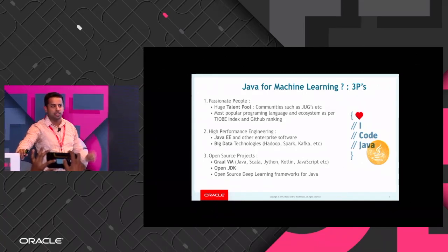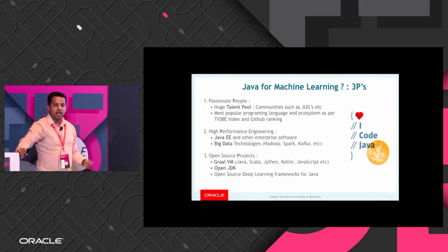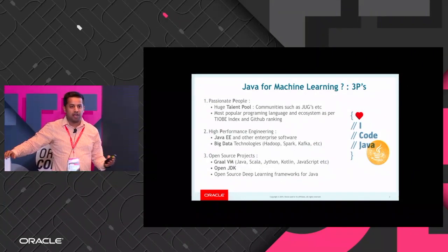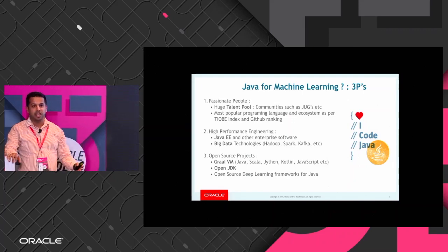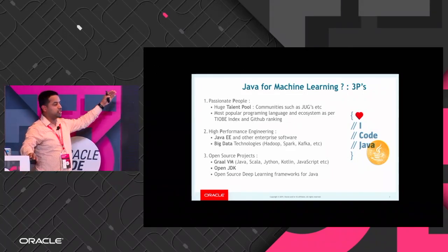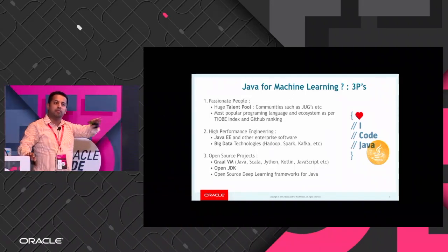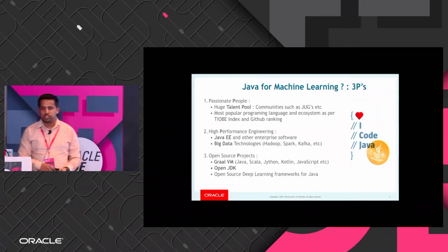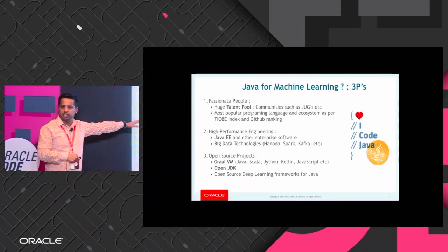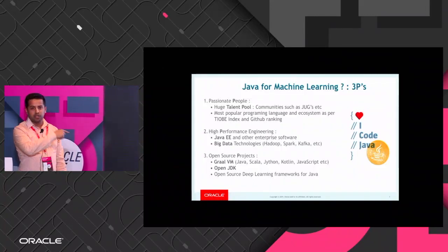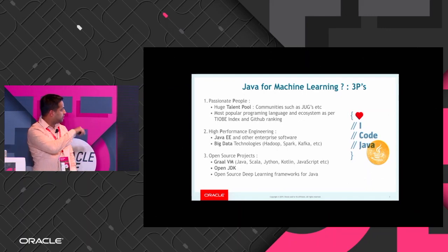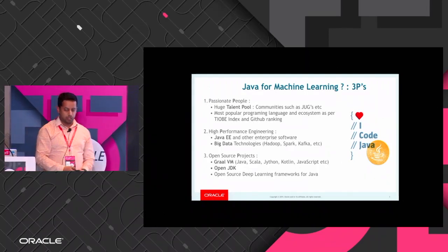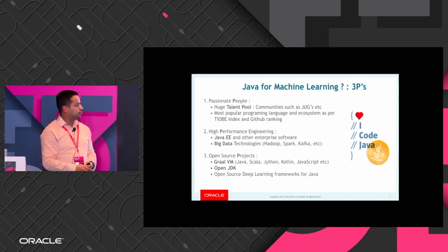First, we have a big talent pool. Second, performance is another aspect of Java, especially in the enterprise world — most big companies run on Java or .NET technologies because they want high performance computing. And in AI, a lot of big data technologies are written on the Java stack. The last P is projects: the open source community and open source projects. There are a lot of deep learning frameworks, so there's no reason not to use Java for machine learning.